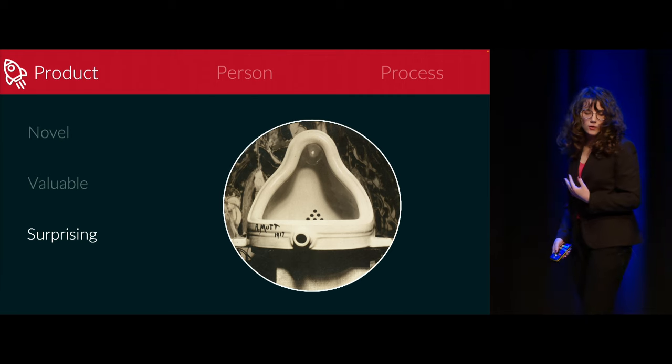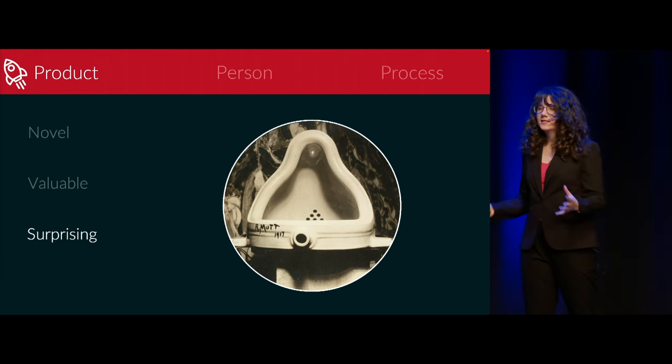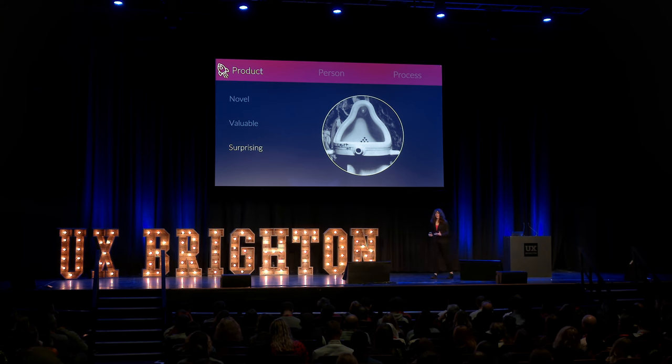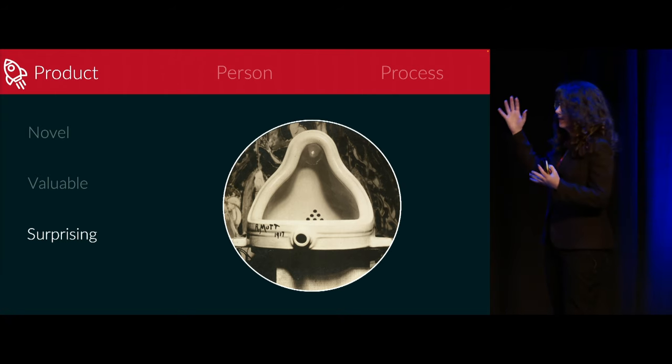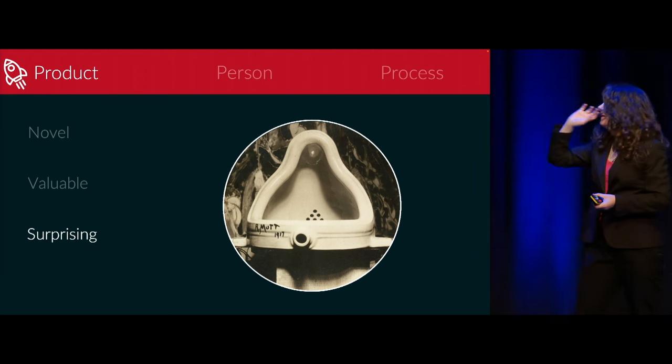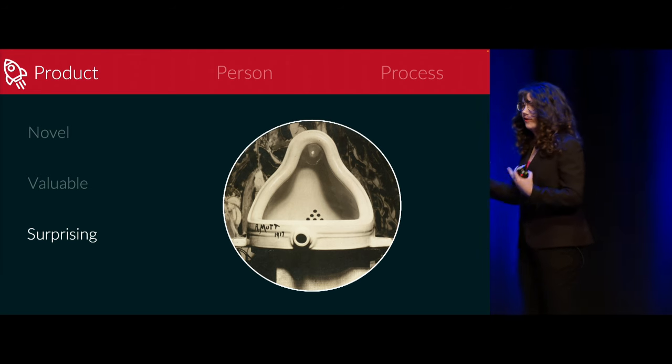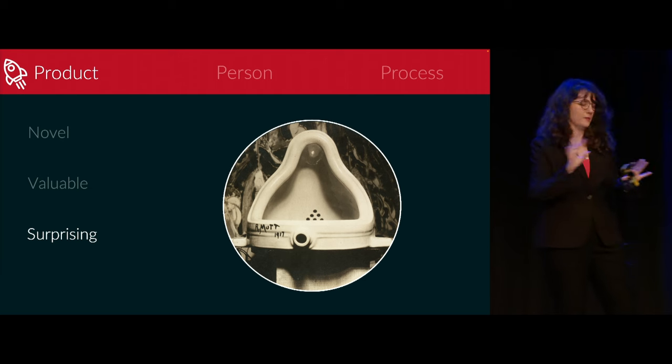The final type of surprise or unexpectedness for Boden is what she calls transformational creativity — impossible ideas made possible. Instead of exploring within a conceptual space, that space itself is transformed, opening up new areas so that things previously not possible can now arise. An example might be Duchamp and the Dada artists of the 20th century. Duchamp's Fountain brought ready-made objects into the art world, which would previously have been thought impossible. After doing this, it changed our view of what art is and made all sorts of new kinds of artwork possible — that's transformational creativity.